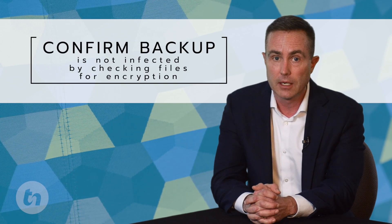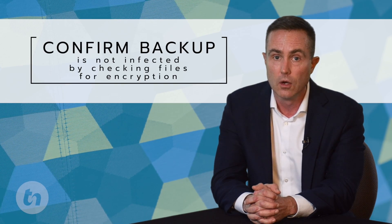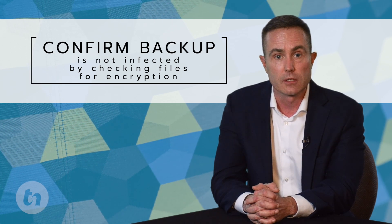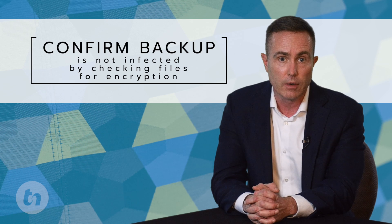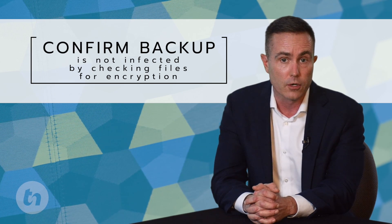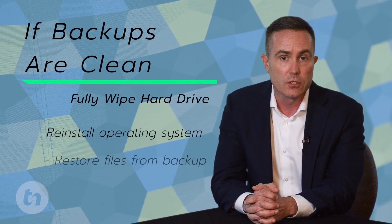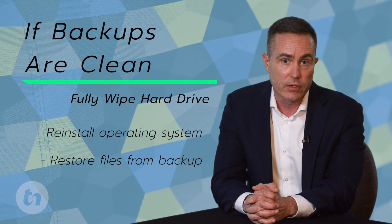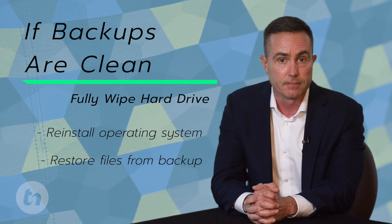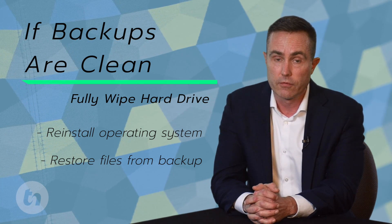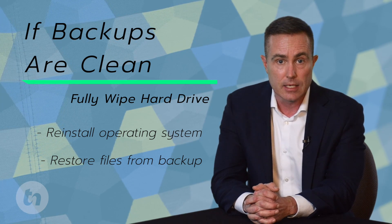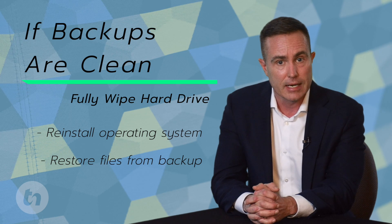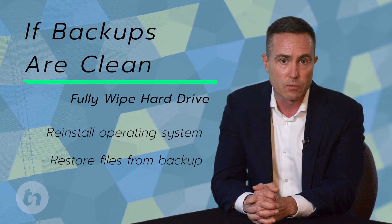To confirm you have a good, uncompromised backup, connect the backup drive to another machine or log in to your online backup service. This will allow you to check on the status of the files. You also want to make sure you have the installation media or license keys for all third-party applications. If the backups are good, you want to fully wipe the drive, do a clean installation of the operating system, and then restore the files from the backup. Restoring files without wiping and reinstalling might seem less troublesome, but it's not a good idea since you might leave some trace of the ransomware on the machine even after performing a full antivirus scan.